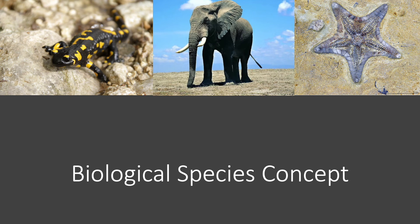If we take our frog example again and apply this definition of the biological species concept — if we were to take the two groups of frogs separated by the highway and try to make them interbreed, and if they were to successfully interbreed and create fertile offspring, then they are in fact still the same species. They're just two populations of the same species.